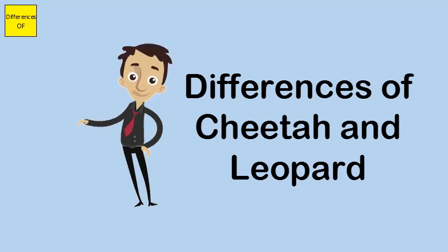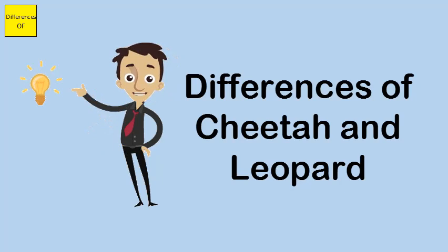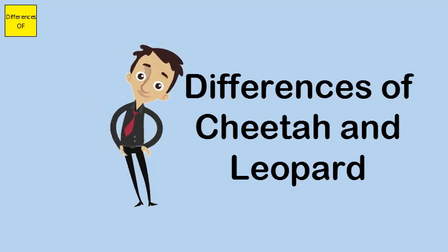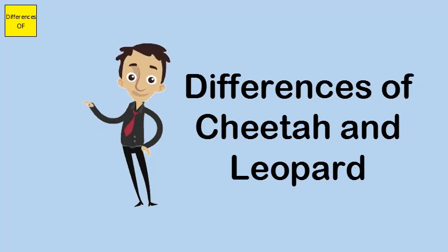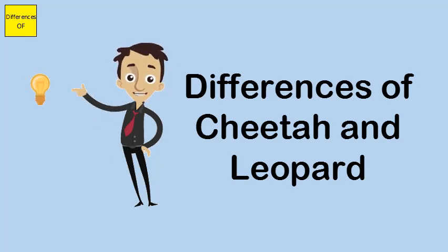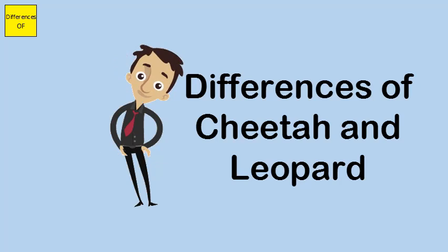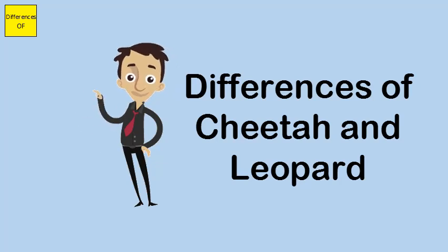Cheetah is found in semi-deserts, prairies, or thick brush. Leopard is found in grasslands, woodlands, and river rainforests. Cheetah typically lives between 8 and 10 years in the wild. Leopard typically lives between 12 to 17 years in the wild.